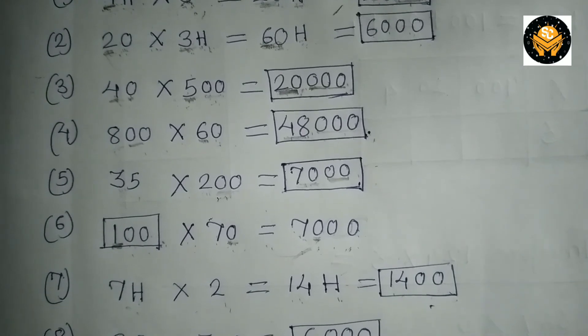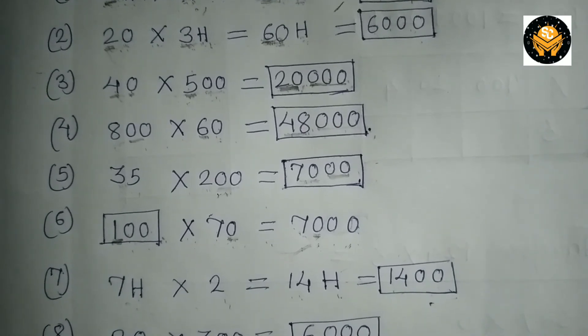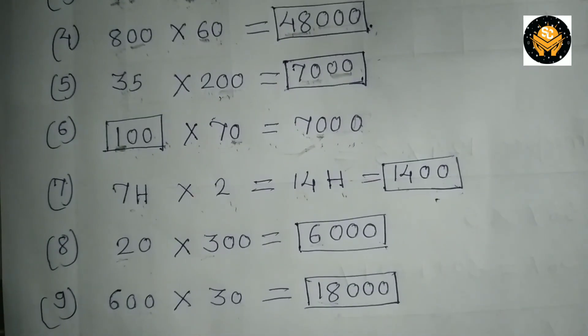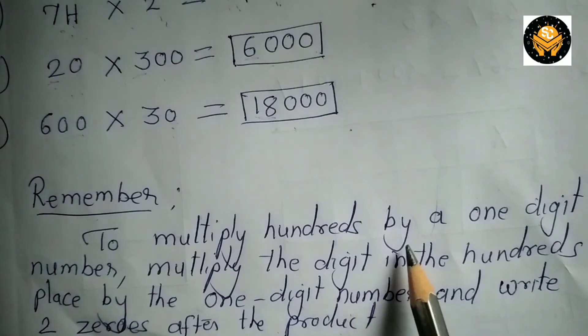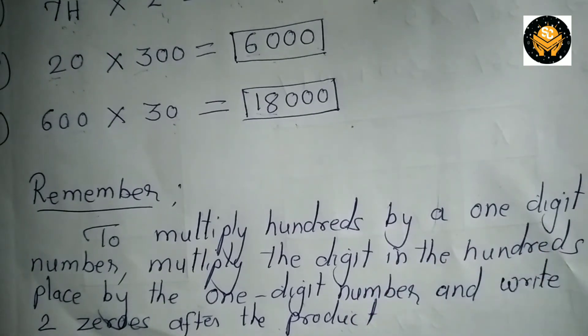20 multiplied by 300 is 6,000. 600 multiplied by 30 is 18,000.